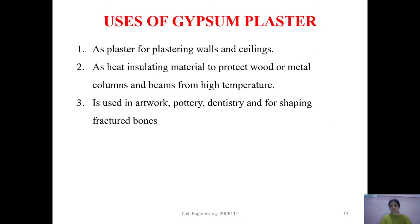Uses of gypsum plaster: as a plaster, it can be used for plastering walls and ceilings. As a heat insulating material, it can be used to protect wood or metal columns and beams from high temperatures. It is also used in artwork, pottery, dentistry, and for shaping fractured bones.